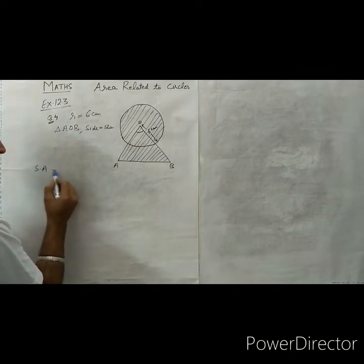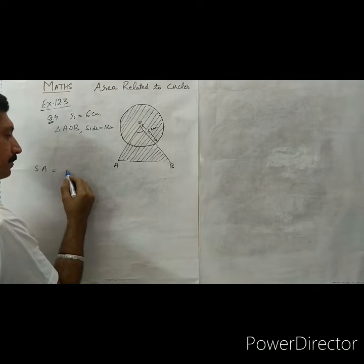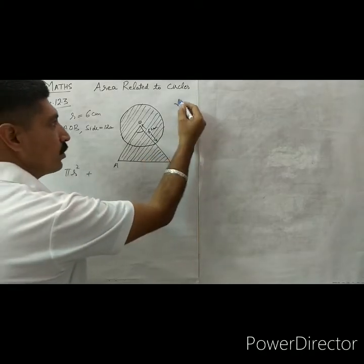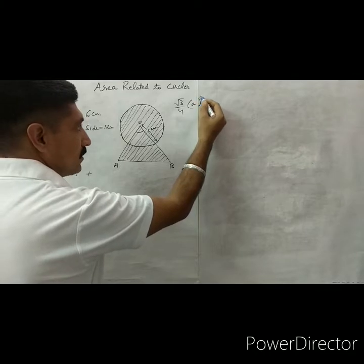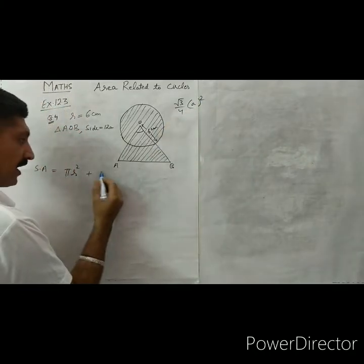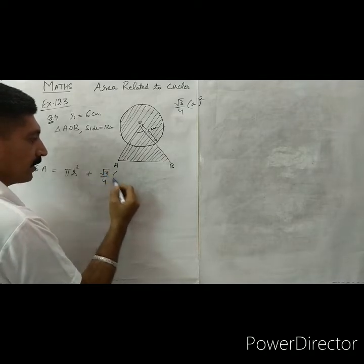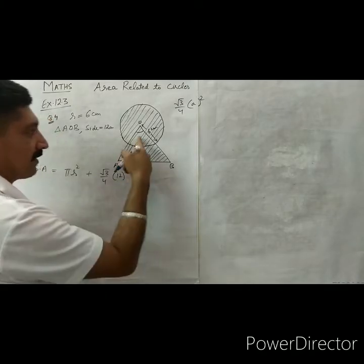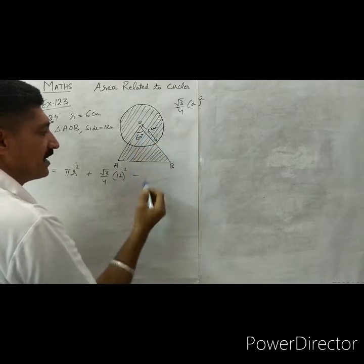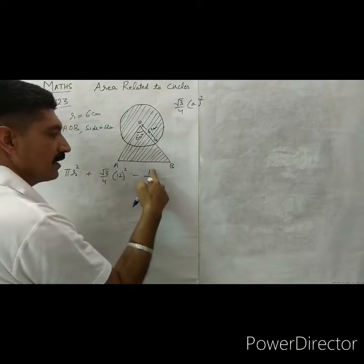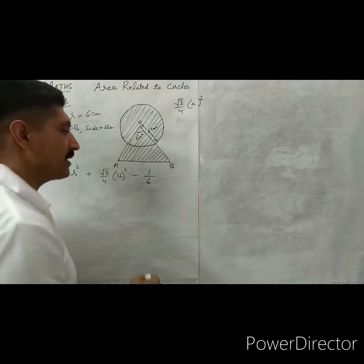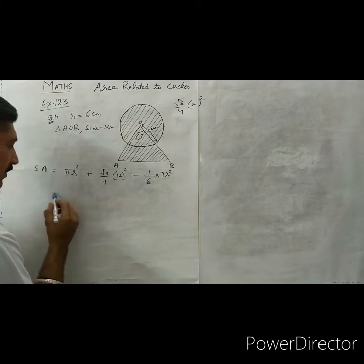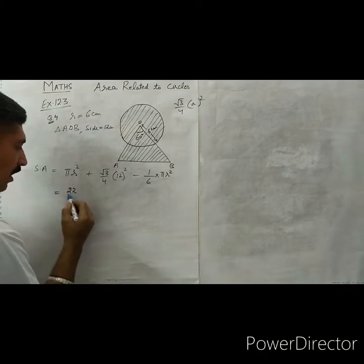Shaded area = πr² + (√3/4) × 12² − area of sector. For an equilateral triangle, each angle is 60°, so the sector angle is 60°. Area of sector = (60/360) × πr² = (1/6)πr². So shaded area = πr²(1 − 1/6) + (√3/4) × 144 = (5/6)πr² + 36√3. Taking π = 22/7 and r = 6: (22/7) × 6² × (5/6) = 22 × 6 × 5 / 7 = 660/7.